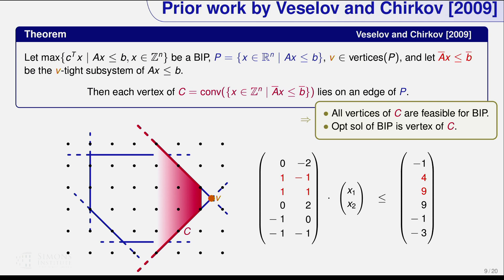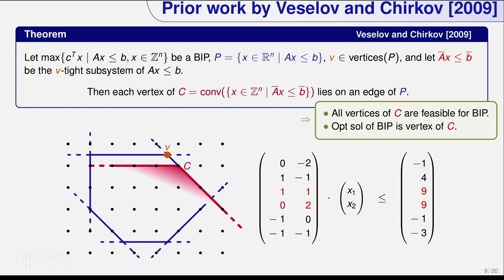This is a very powerful result — you can forget about all constraints that are not tight. If you're non-degenerate, you could look at all the polynomially many rays and check where the first integer point lies. But the hard part is fighting degeneracy, since most common problems are highly degenerate. In another example: pick another vertex, look at the tight constraints, and the convex hull of integer points gives one vertex on an edge of the original relaxation.